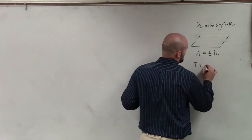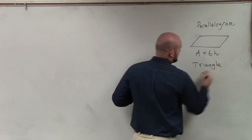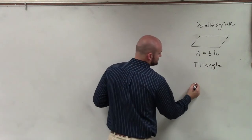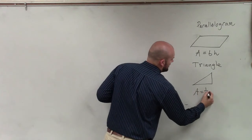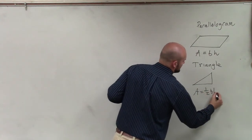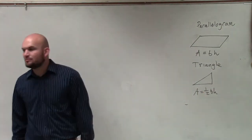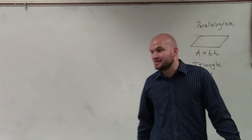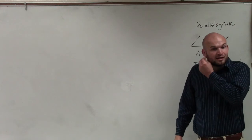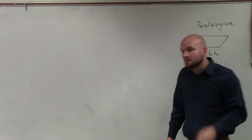Then we talked about triangles. To find the area of a triangle, it's obviously just one half of a parallelogram. There are many different ways to look at it, but the area of a triangle is one half base times height. So again, you need to find the base and the height.